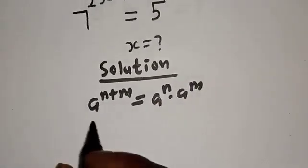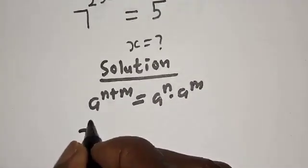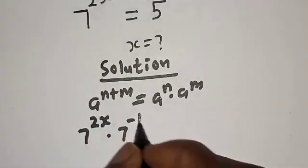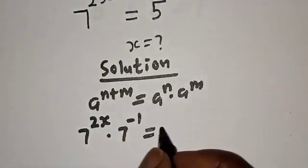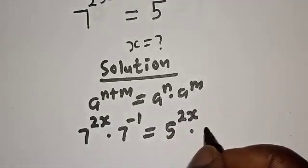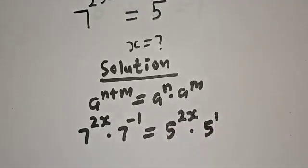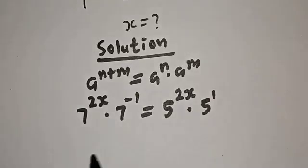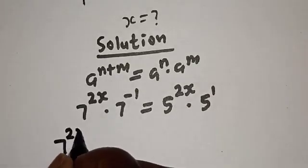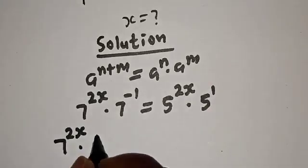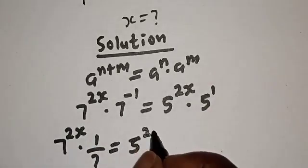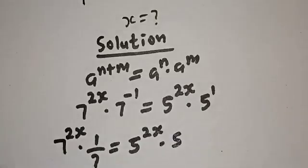We have 7 raised to power 2s multiplied by 7 raised to power minus 1, is equal to 5 raised to power 2s multiplied by 5 raised to power 1. From here, we have 7 raised to power 2s multiplied by 1 over 7, is equal to 5 raised to power 2s multiplied by 5.